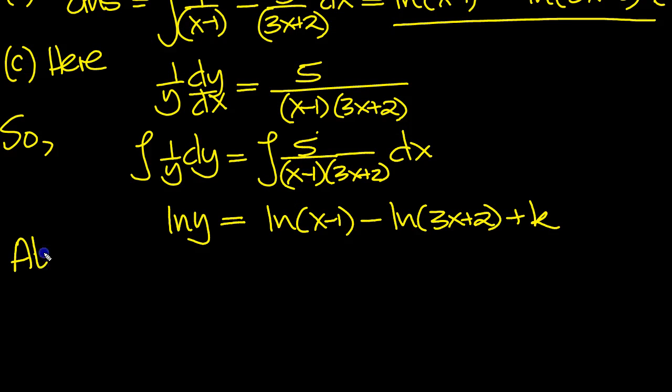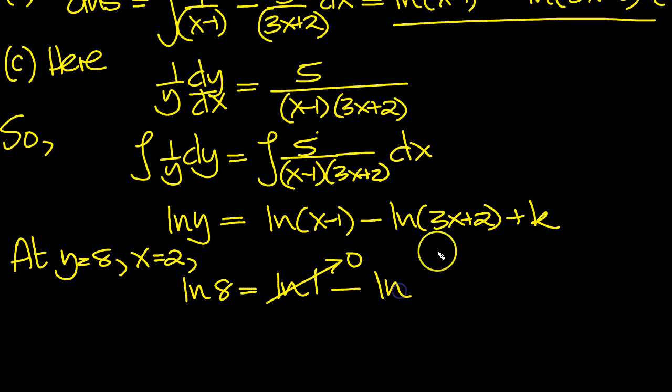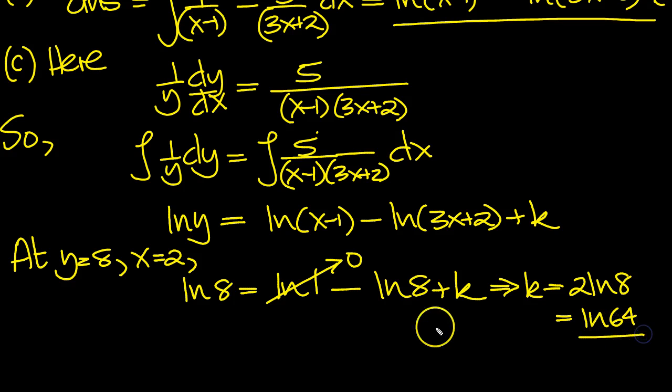So at y equals 8, x equals 2. Put it in. Log of 8 is equal to ln 2 minus 1 is log 1, which we know is 0. Minus ln, put 2 in here. 3 times 2 is 6 plus 2 is 8 plus k. So that tells us then that k is equal to, move the log 8 over, it's 2 log 8. And then you can move the 2 up using properties of logs. 8 squared is 64. So k is equal to 64.